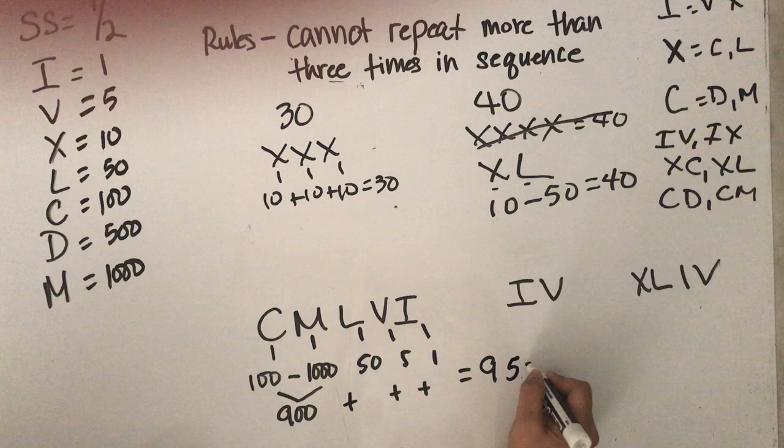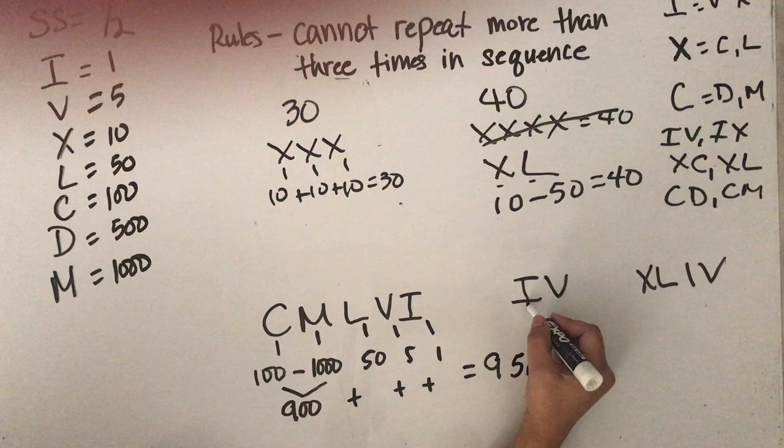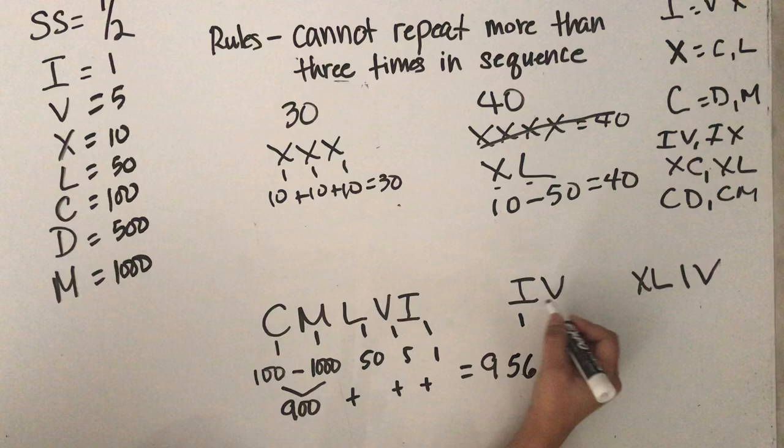With IV, if you start with an I, this is 1. And then V is bigger than I, so you have to minus. So 1 minus 5 equals 4.